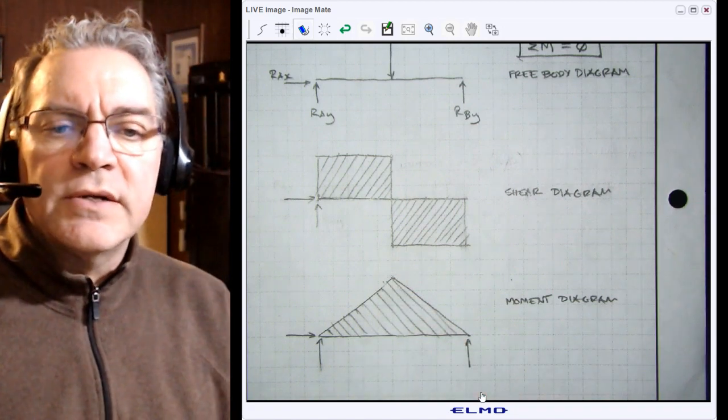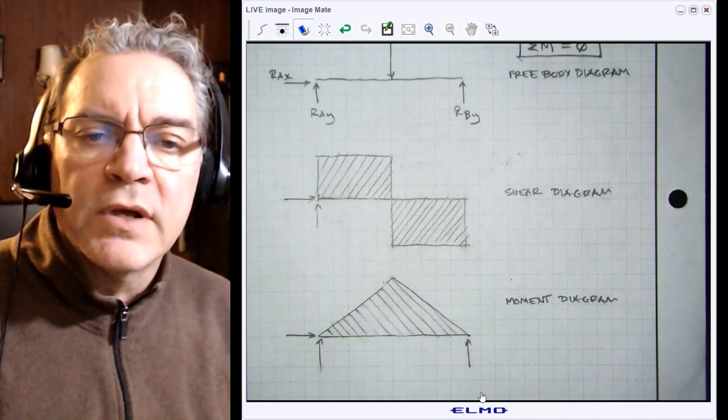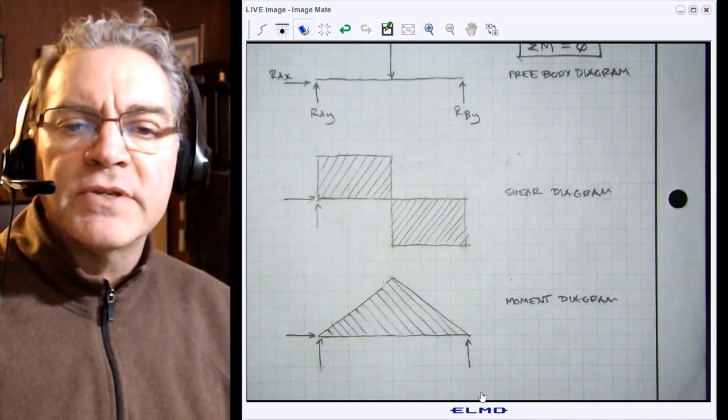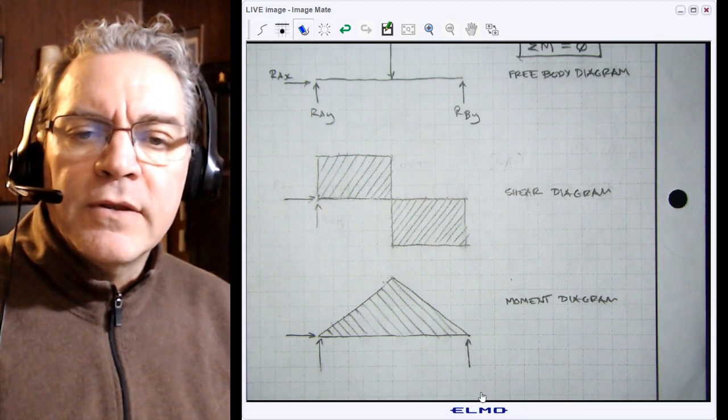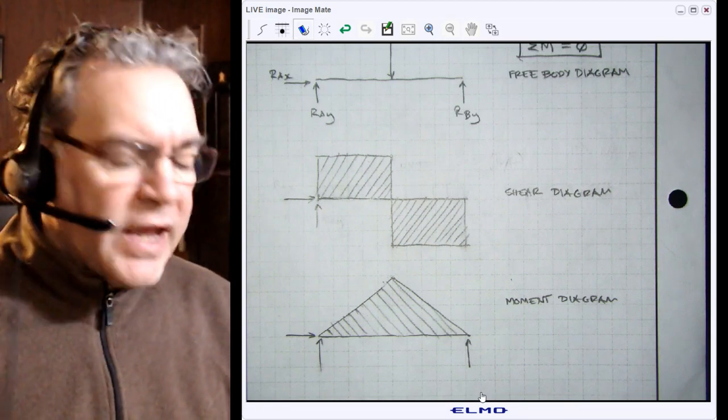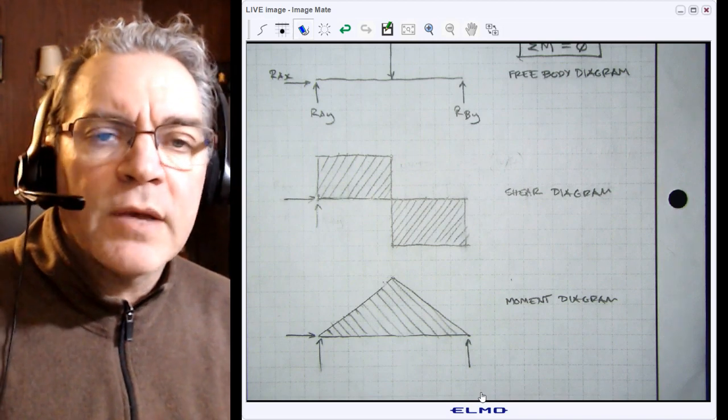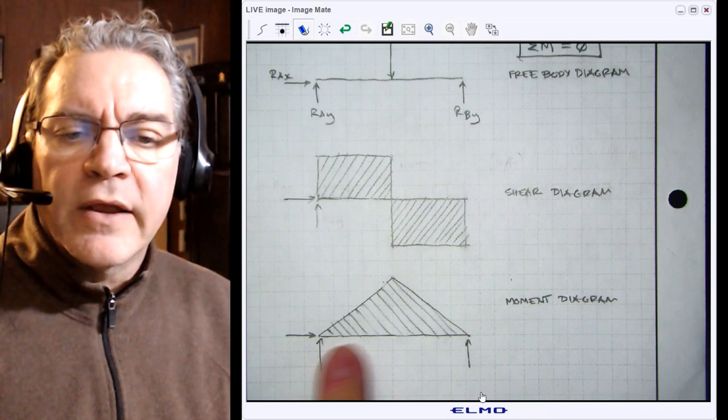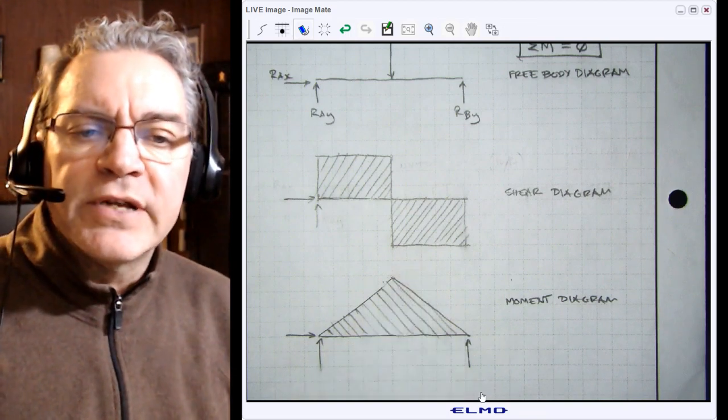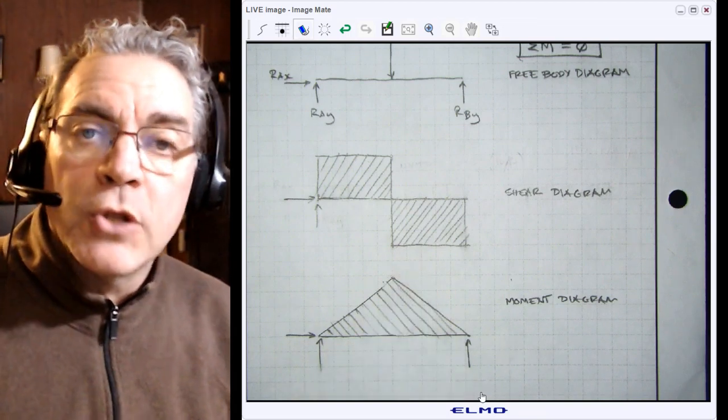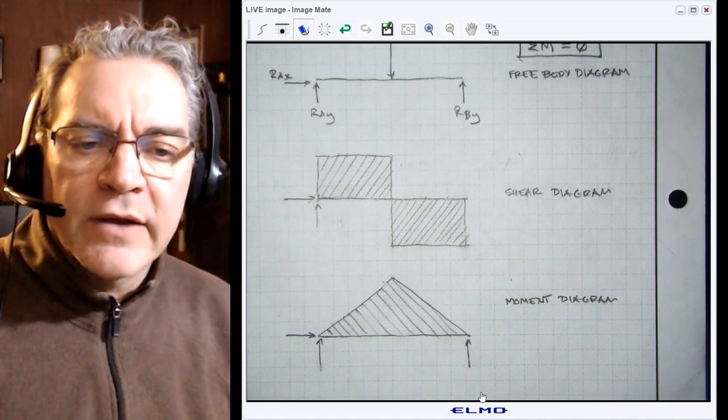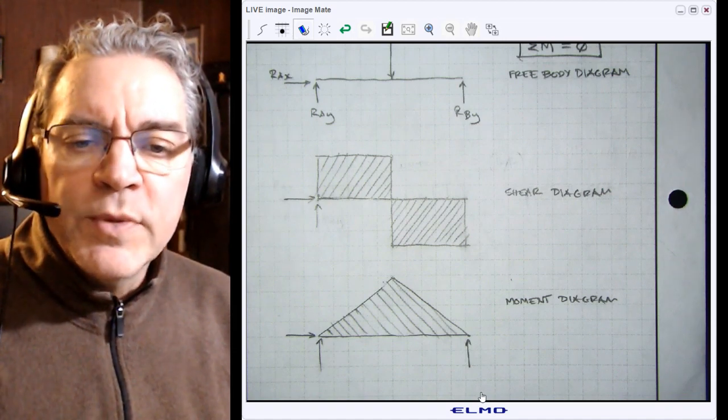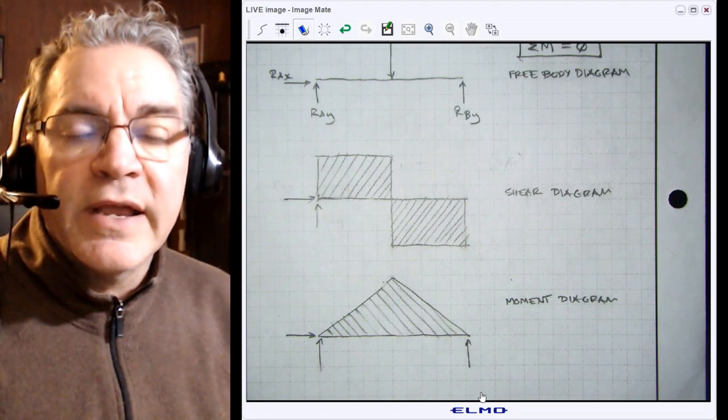These are the shear and moment diagrams for a simple point load applied to the center of the beam. You should learn the pattern, and those of you in calculus might recognize that the shear diagram represents the slope of the moment diagram, and the inverse is also true: the moment diagram represents the area under the curve of the shear diagram.